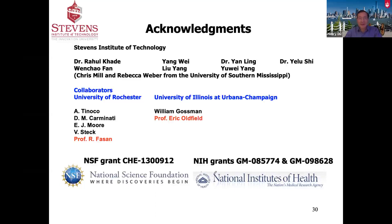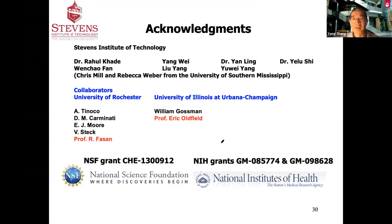Thanks very much, Yong — a huge amount of work, very impressive. We are seven minutes behind schedule and have time for one question. If not, I have a question: do you write your own code or use a commercial package? For this purpose, we use commercial software called Gaussian — the original developer of this software actually also got the Nobel Prize. It is the most widely used quantum chemistry package.